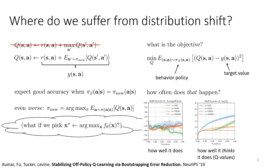This is further exacerbated because pi_nu is directly selected to maximize the expected value of the Q function, meaning pi_nu is strongly incentivized to find adversarial actions that fool the Q function into outputting erroneously large Q values. This is exactly what we see in practice, as shown in the plots — the actual reward of policies trained with standard offline Q-function actor-critic methods is very low, but the Q function estimates the return will be extremely high, reaching 10 to the seventh power.